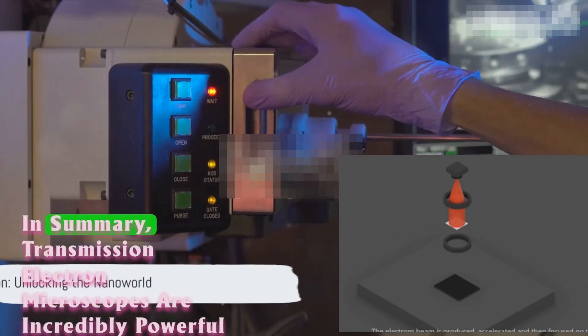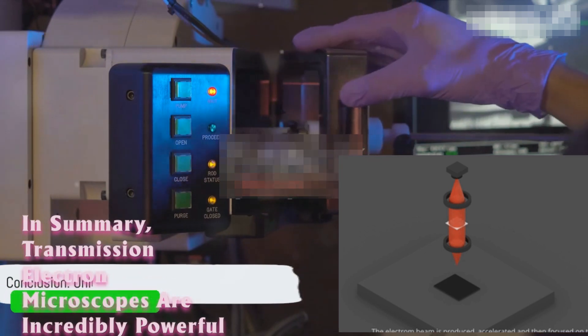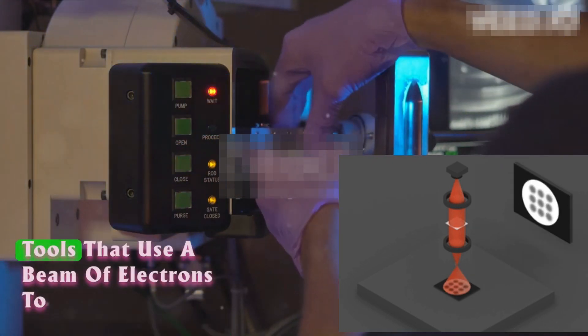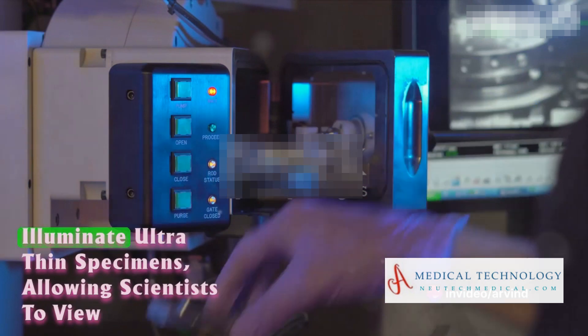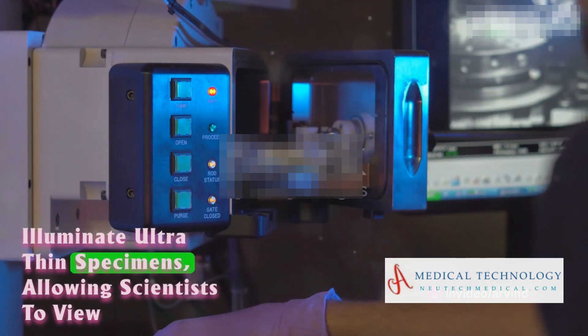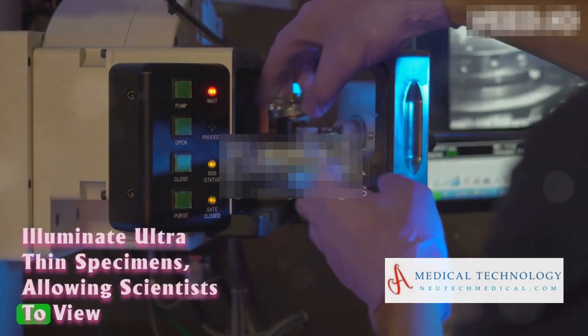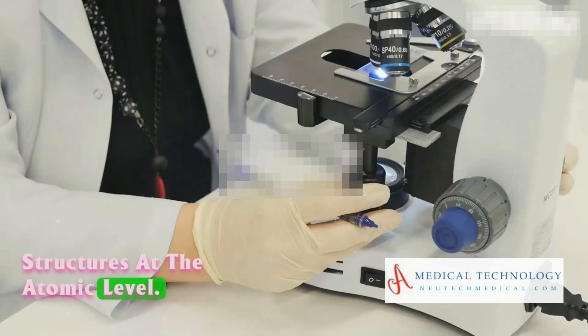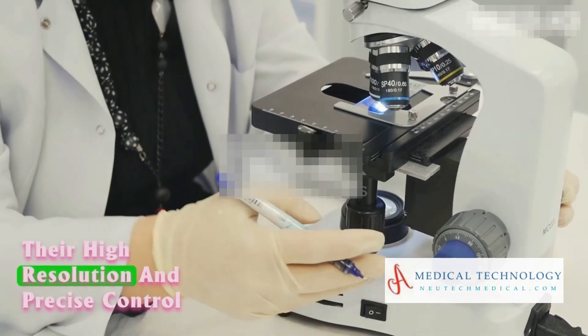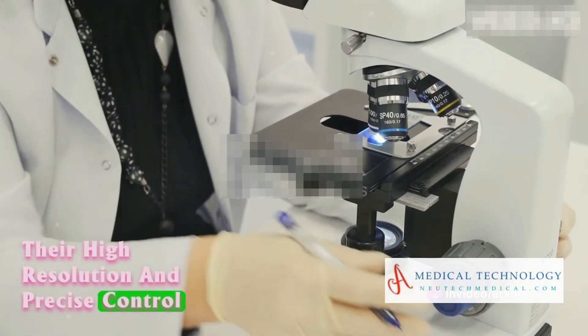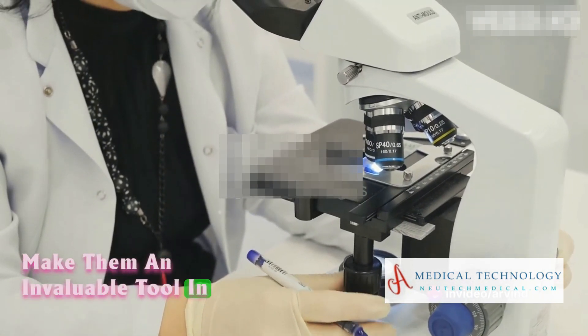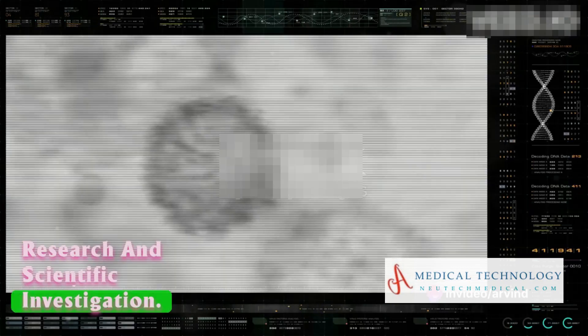In summary, transmission electron microscopes are incredibly powerful tools that use a beam of electrons to illuminate ultra-thin specimens, allowing scientists to view structures at the atomic level. Their high-resolution and precise control make them an invaluable tool in research and scientific investigation.